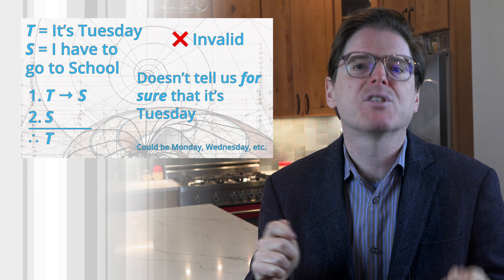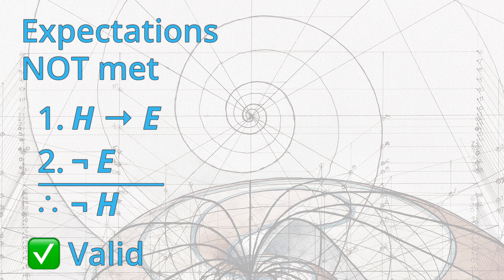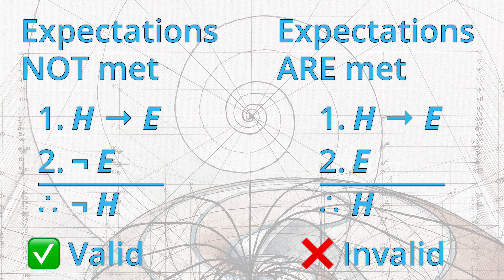Let's go back to how scientists reason. If their hypothesis entails certain expectations and those expectations are not met, then they can conclude that the hypothesis is not true. If H, then E; not E; therefore not H — is valid. However, if those expectations are met, they can't conclude that their hypothesis is true. If H, then E; E; therefore H — is not valid.